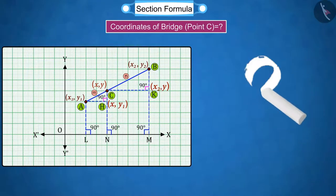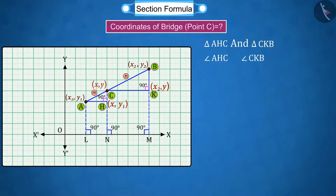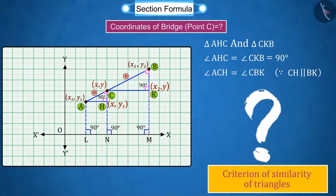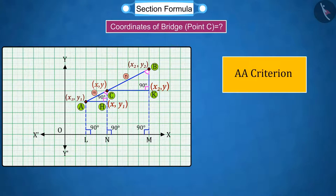Observe carefully and tell how many triangles can you see in this figure. Absolutely correct. Here we have two triangles, triangle AHC and triangle CKB, where angles AHC and CKB are equal to 90 degrees and angle ACH equals angle CBK because line segment CH is parallel to BK and AB is a transversal. These represent the AA criterion of similarity of triangles, from which we can state that triangles AHC and CKB are similar triangles.